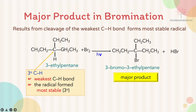Alkyl groups are electron-donating groups. When this carbon becomes a free radical with one unpaired electron — not octet — having three alkyl groups makes it most stable. So Br replaces the hydrogen at the highest carbon class. It will not replace the hydrogen at the primary carbon (less stable) or secondary carbon (less stable). The hydrogen at the tertiary carbon gives the most stable radical, so the major product is 3-bromo-3-ethylpentane.